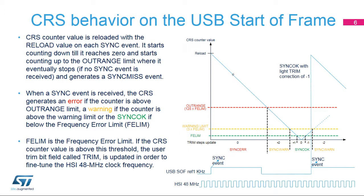A sync event received when the counter is below the outrange will eventually fine-trim the HSI 48, depending on the phelim 7-0 value. If the CRS counter value is below the phelim limit, no trim actions are taken. If it is between 3 times phelim and phelim, the trim bit is incremented or decremented by 1, depending on the counter direction. If the CRS counter is between 128 times phelim and 3 times phelim, the trim bit field is incremented or decremented by 2 trim steps.